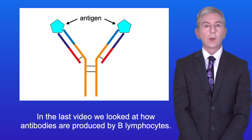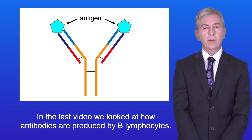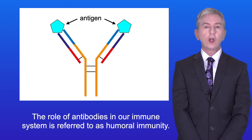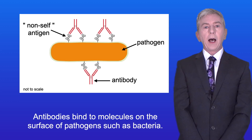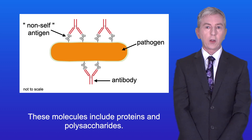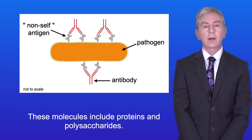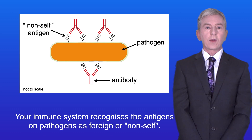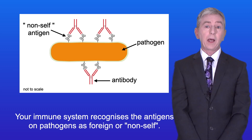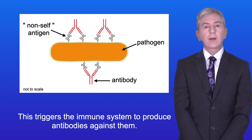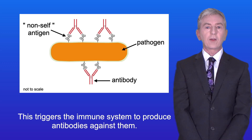In the last video we looked at how antibodies are produced by B lymphocytes. The role of antibodies in our immune system is referred to as humoral immunity. Antibodies bind to molecules on the surface of pathogens such as bacteria. These molecules include proteins and polysaccharides, and scientists call these molecules antigens. Your immune system recognizes the antigens on pathogens as foreign or non-self, and this triggers the immune system to produce antibodies against them.